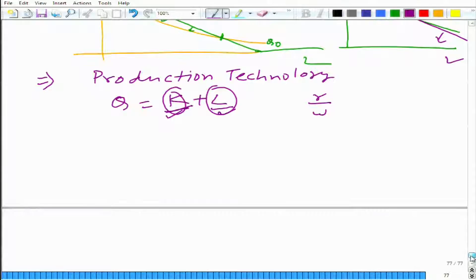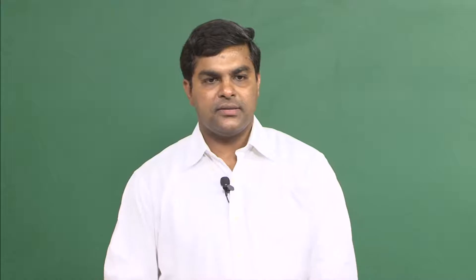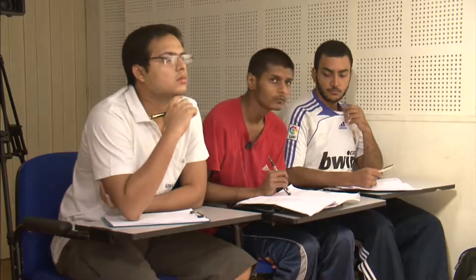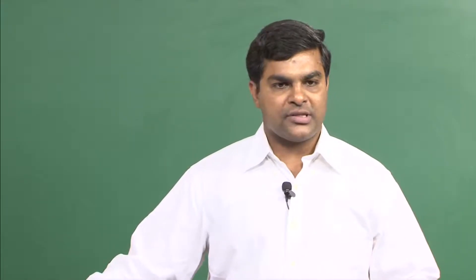How can we solve this? We have solved a similar problem when we discussed consumer theory. The isoquant here is a straight line, so the solution must come at the end points — either on the x-axis or the y-axis. That is one way to think about it, and it is correct.